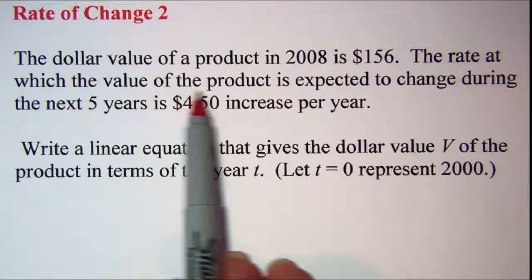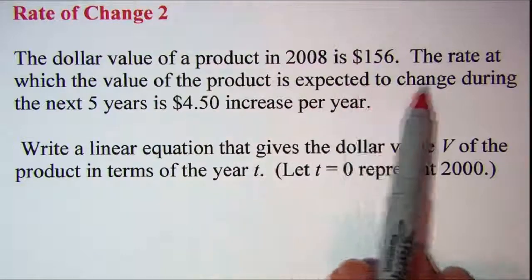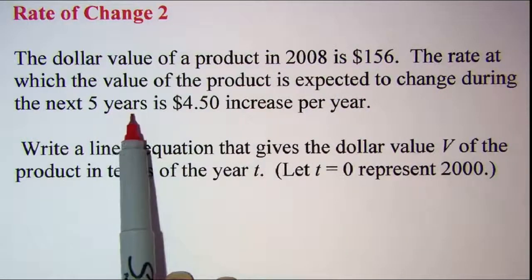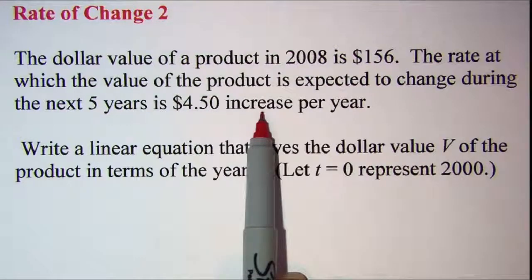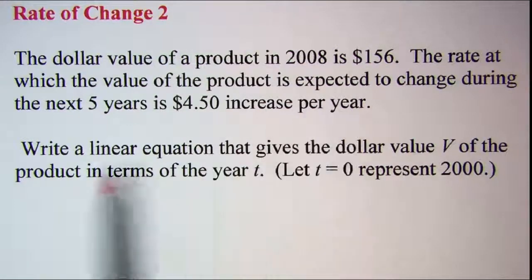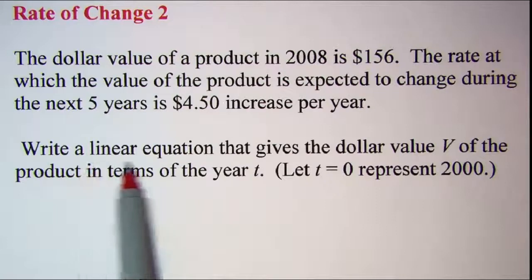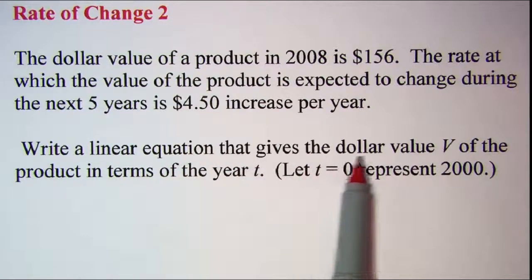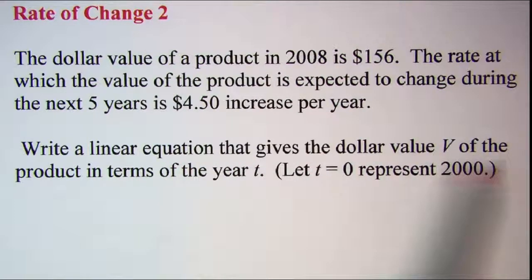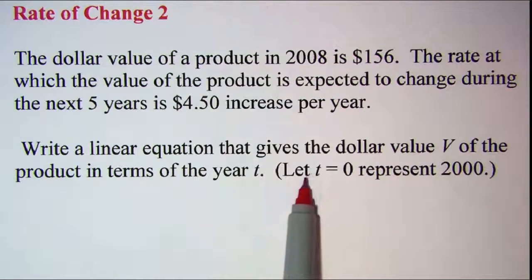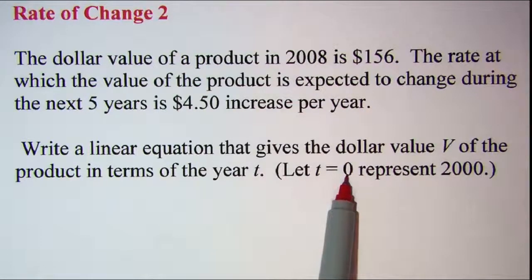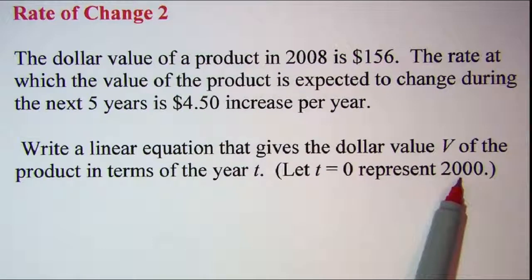The rate at which the value of the product is expected to change during the next five years is $4.50 increase per year. We are asked to write a linear equation that gives the dollar value v of the product in terms of the year t, and we are told that we can let t equals zero represent the year 2000.